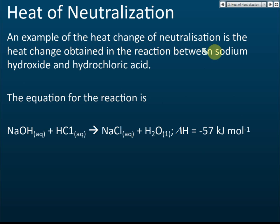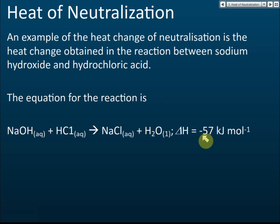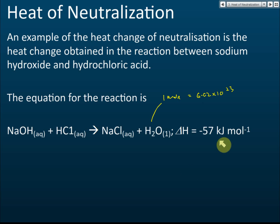An example of heat of neutralization is the reaction between sodium hydroxide and hydrochloric acid. Sodium hydroxide reacts with hydrochloric acid to produce sodium chloride and water. The heat of neutralization is -57 kJ/mol. Since the value is negative, heat is released to the surroundings — it is an exothermic reaction. To form one mole of water (6.02 × 10²³ molecules), 57 kJ of heat energy is released.